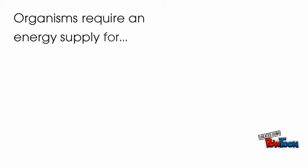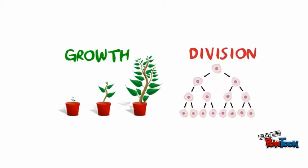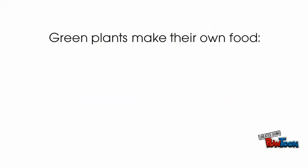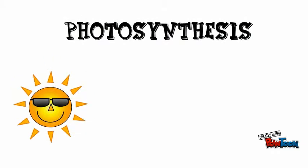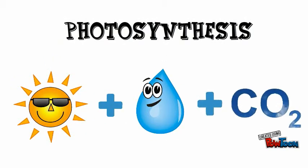All organisms require an energy supply for cell activities such as growth and division. Producers are green plants and make their own food using light energy from the sun, water and carbon dioxide from the atmosphere.